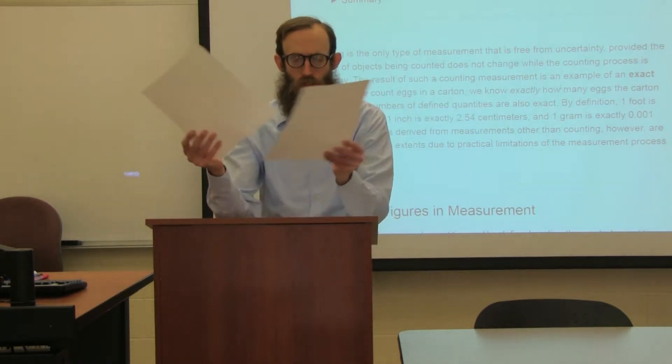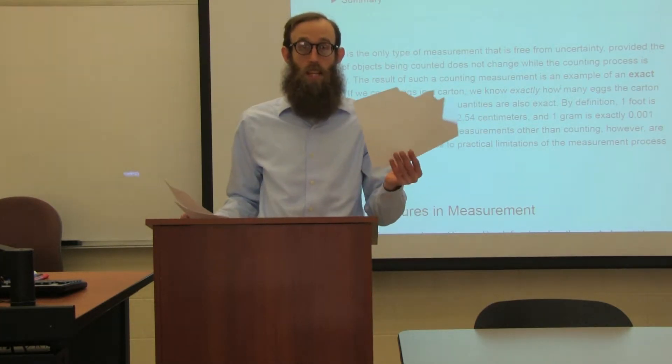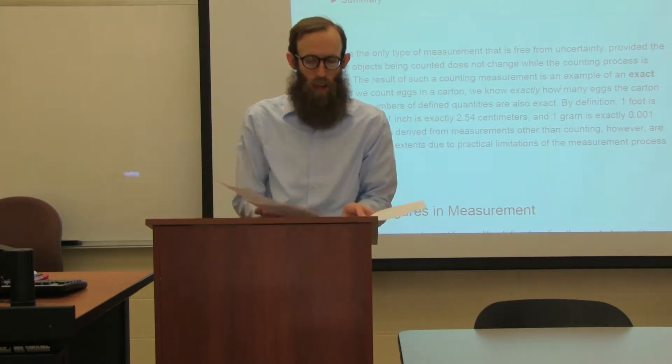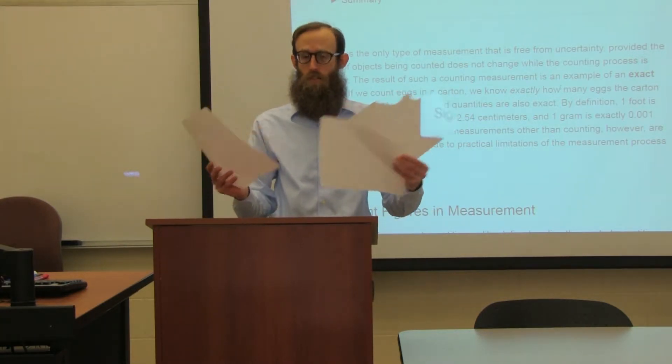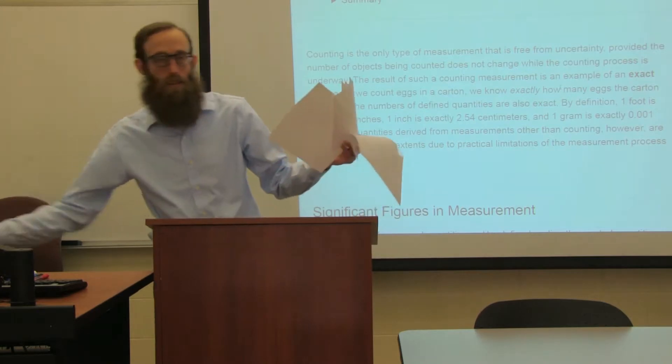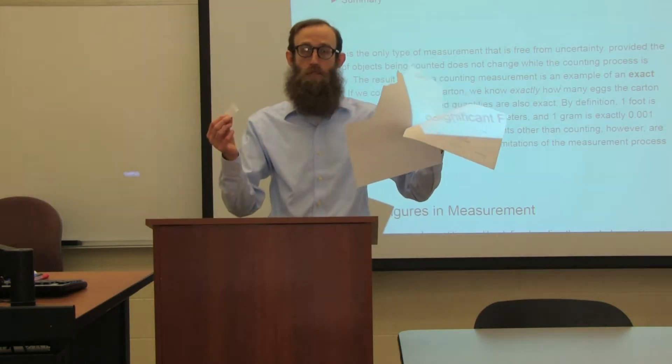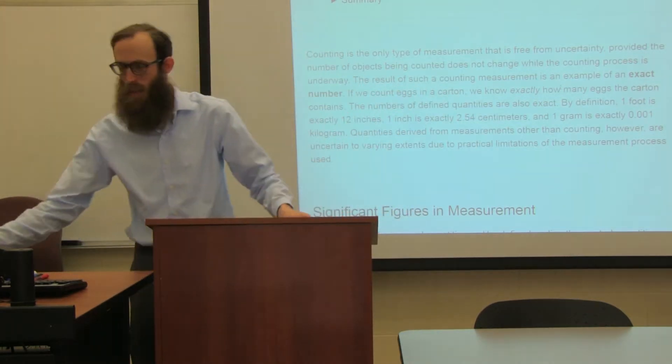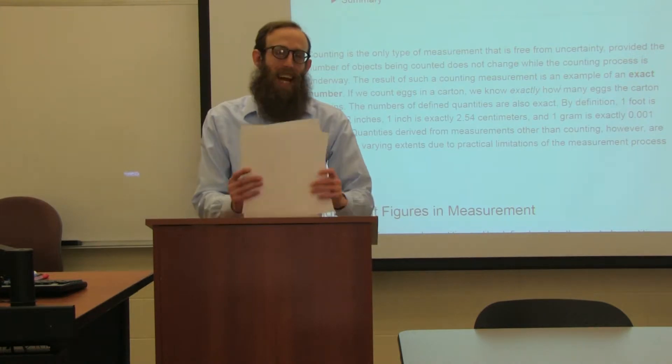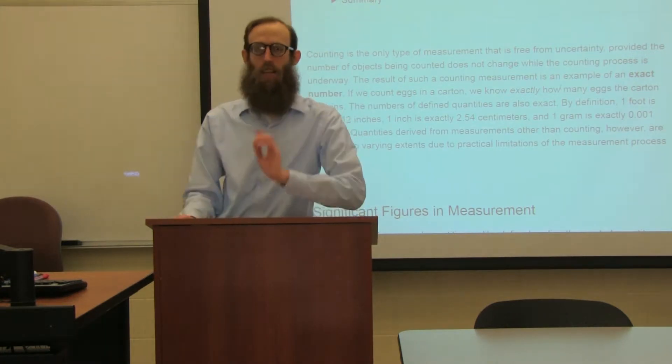But I say I have two sheets of paper, and that is true. Now if I just want to say that this is a piece of paper, that's right. But I have three pieces of paper. I mean, it doesn't say anything about the size. I have four pieces of paper now. So when we go to count, those are exact numbers. They are precise. There is no uncertainty inherent within.